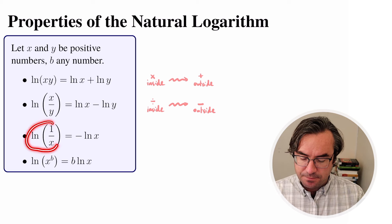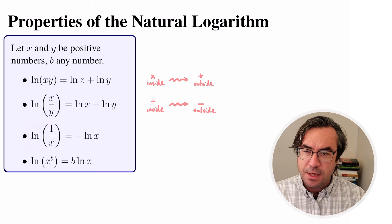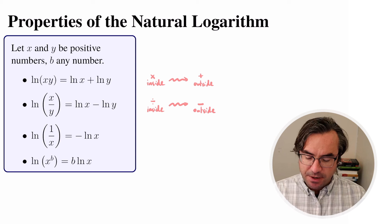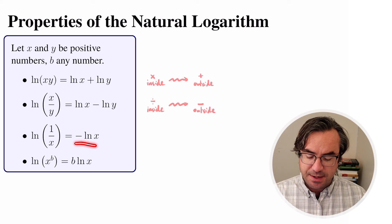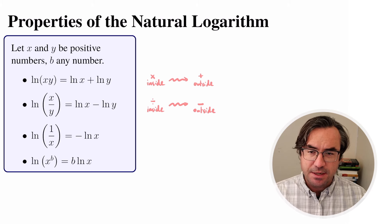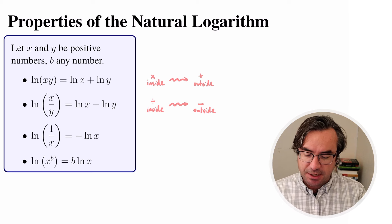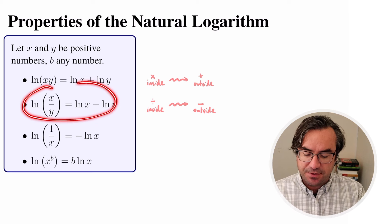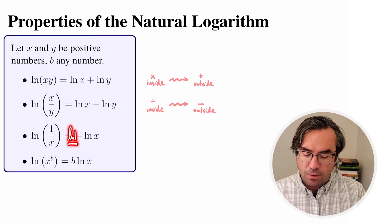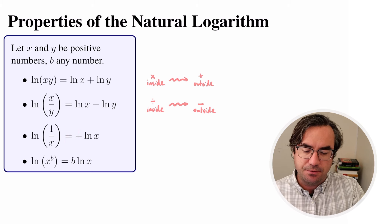A similar property: if we have natural log of 1 over x, that's the same thing as negative natural log of x. This is really just a consequence of the division property — we do have a natural log of 1 in front, but natural log of 1 is just 0.